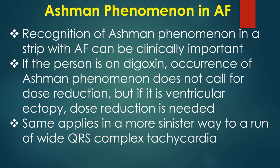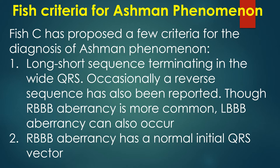If the person is on digoxin, occurrence of Ashman phenomenon does not call for dose reduction. But if it is ventricular ectopy, dose reduction is needed as it could be due to digoxin toxicity. The same applies in a more sinister way to a run of wide QRS complex tachycardia. FISH has proposed a few criteria for the diagnosis of Ashman phenomenon.